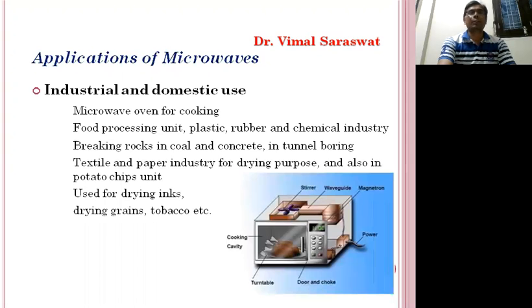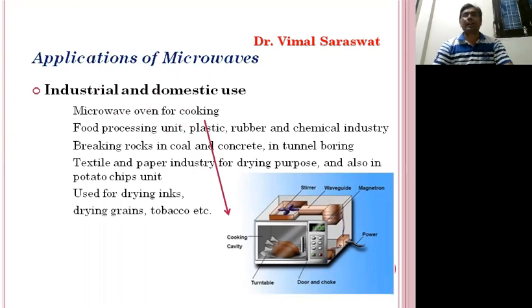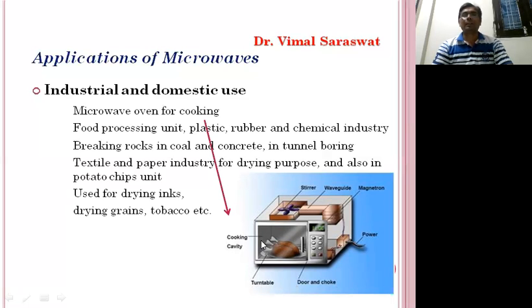Here we are showing a microwave oven used for cooking at home. Here we have a waveguide, this one is the magnetron, here we have the power cable, this one is the door and the chalk, and here we have the cooking cavity. So this is the microwave oven.